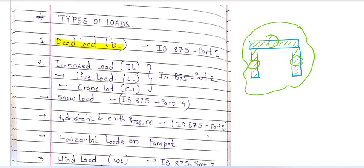Whenever we design a structure and we know the dead load, we can easily calculate it, because we know the components and the weight of those components. So we call it dead load. When we design a structure, we consider the load that is already in the structure — it is the components.